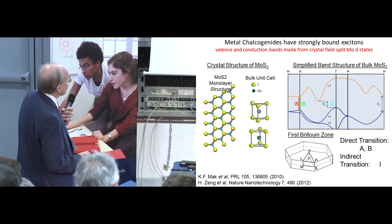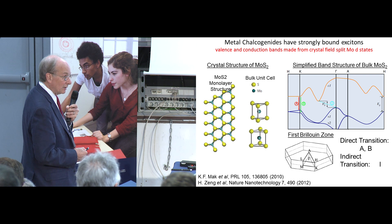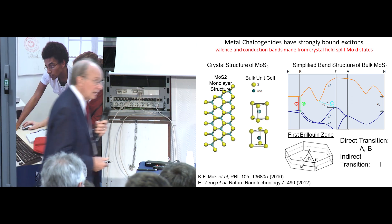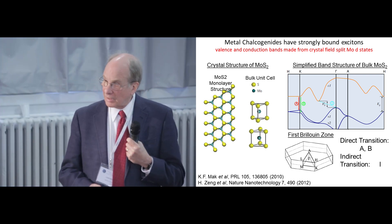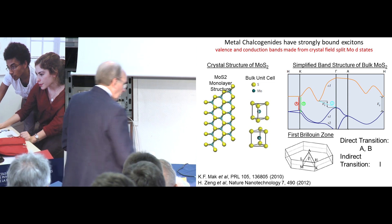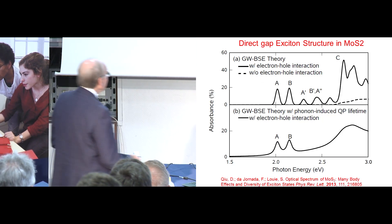So in a single layer of this material, in a single layer, it's actually direct gap and strongly luminescent. And it has, in fact, really strong excitonic structure as well. And a good example of that comes from this recent calculation by Steven Louie and his group, using correlated electron theoretical methods, just this last year in Physical Review Letters.